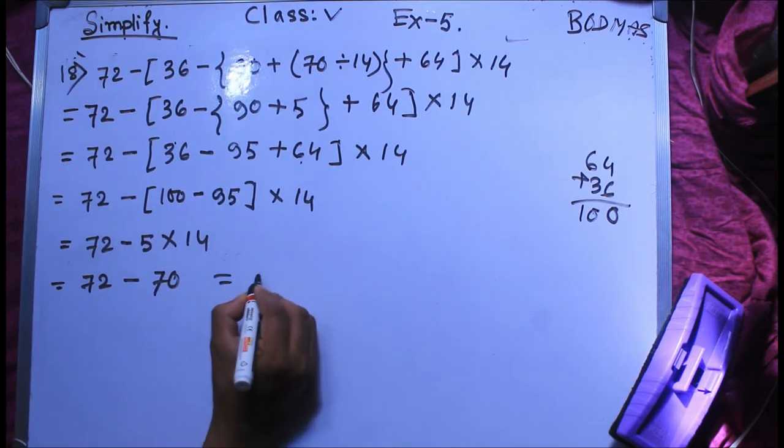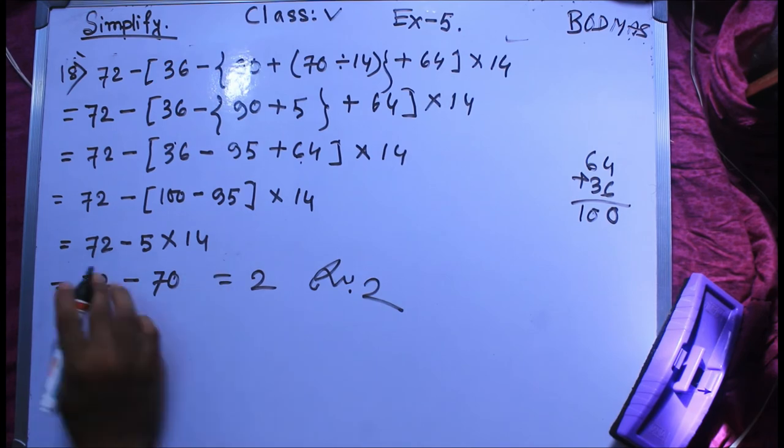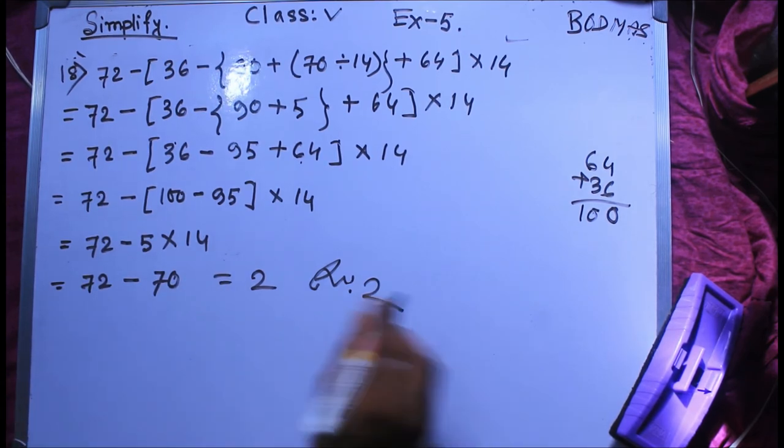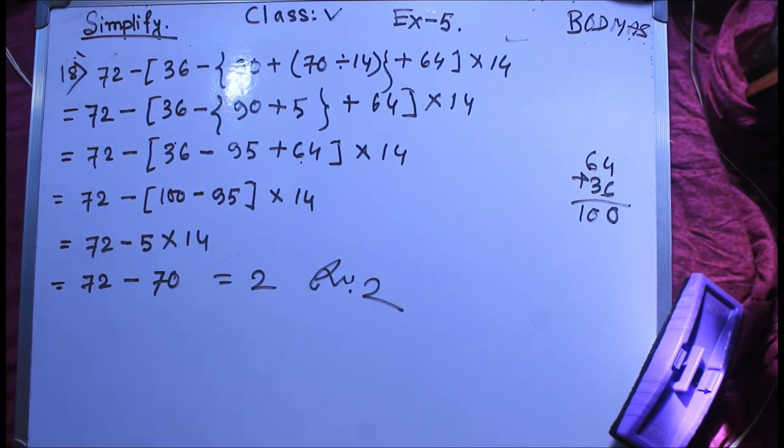So I am going to add 2. Answer is 2. 72 minus 70, answer is 2.